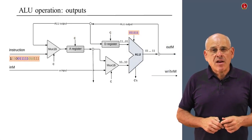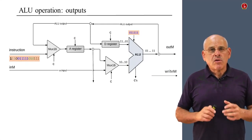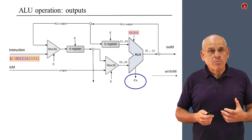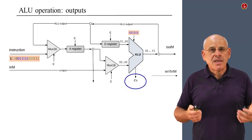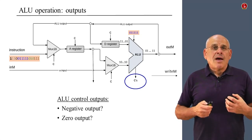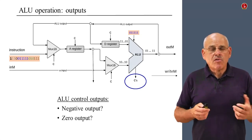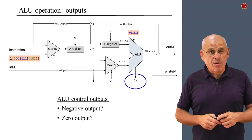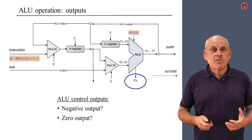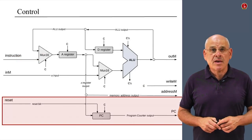The ALU also computes and outputs two control outputs called ZR and NG, which document whether the ALU output is zero or negative respectively. These two control bits play a key role in what comes next — the control logic of the CPU.